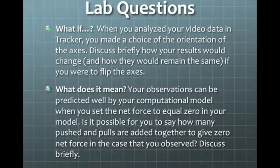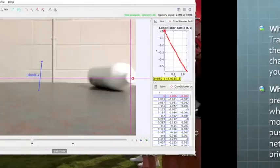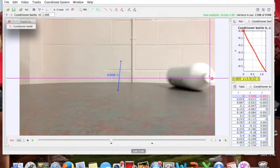Lastly, I will be answering the questions from the lab. First off is the what-if question. If the axis was changed, the bottle would be moving on the positive x-axis. The slope of the resulting graph in Tracker would also change, going from a negative to a positive slope. The same number of points would be taken, and the distance traveled would be the same.